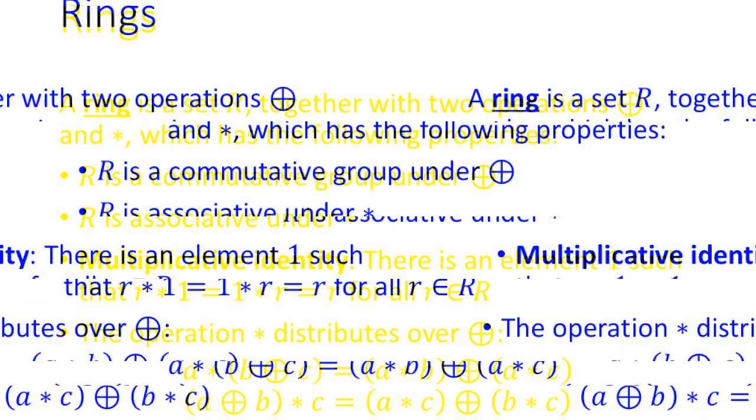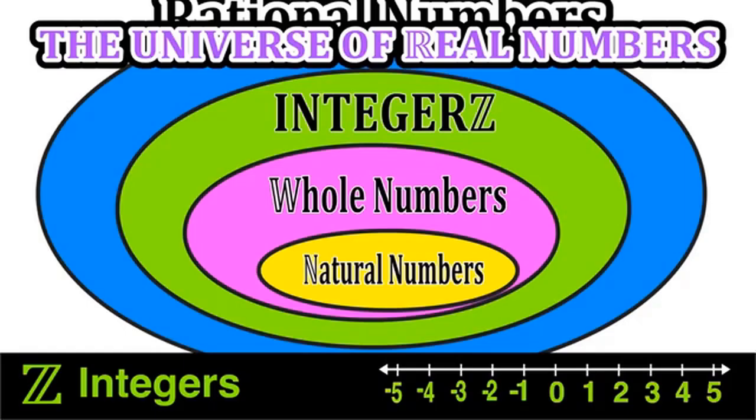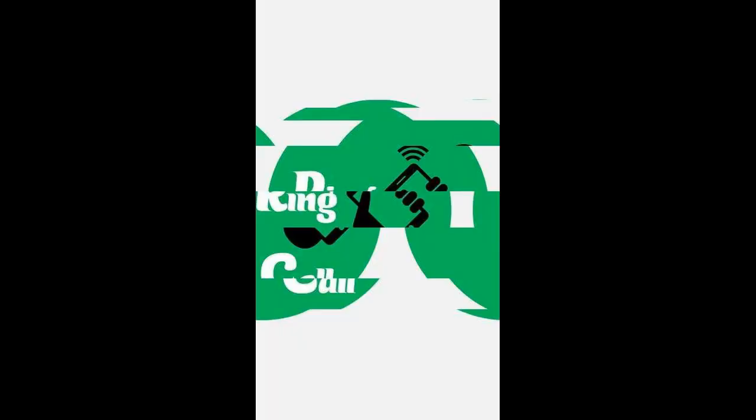For any element x in a ring R, one has x·0 = 0 = 0·x and -(-x) = x. If 0 = 1 in a ring R, then R has only one element and is called the zero ring.